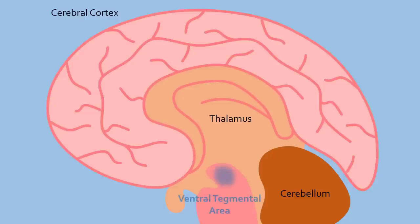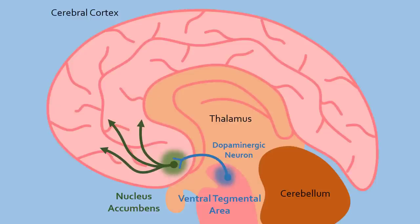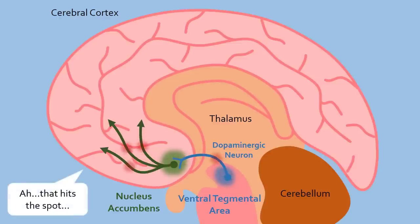The ventral tegmental area and the nucleus accumbens. Dopaminergic neurons in the ventral tegmental area release the neurotransmitter dopamine to activate the nucleus accumbens, which then activates other areas of the brain to cause the feeling of euphoria. Usually, these dopaminergic neurons are tightly controlled by inhibitory GABAergic interneurons.